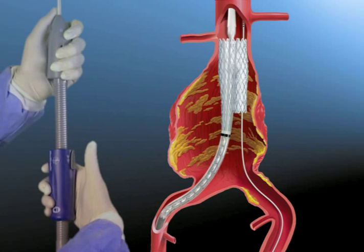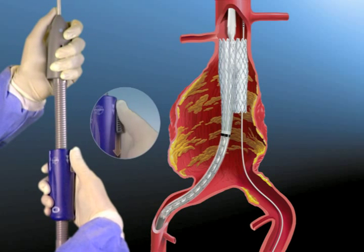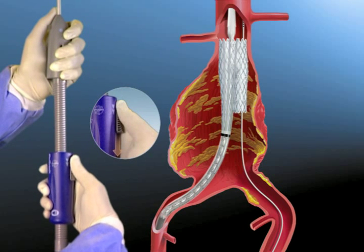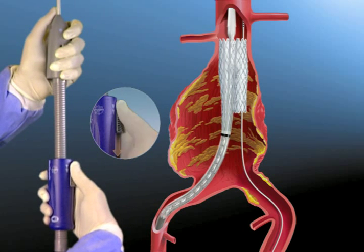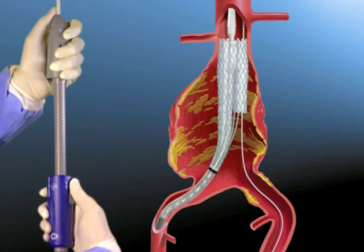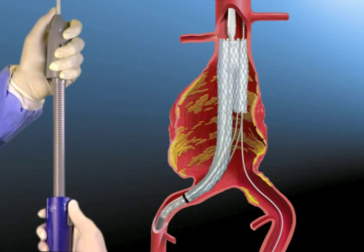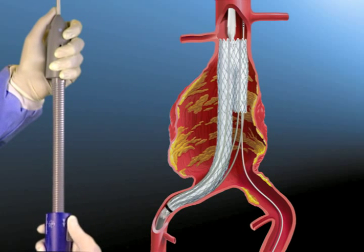To deploy the distal end of the stent graft, hold the delivery system stationary and retract the graft cover until it is just below the distal radiopaque marker on the delivery catheter.